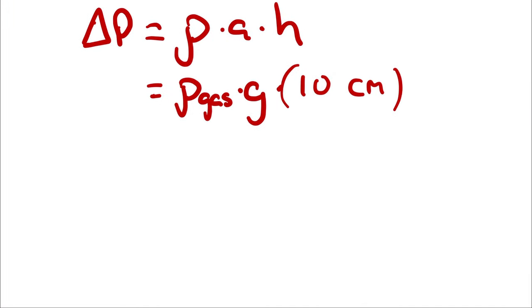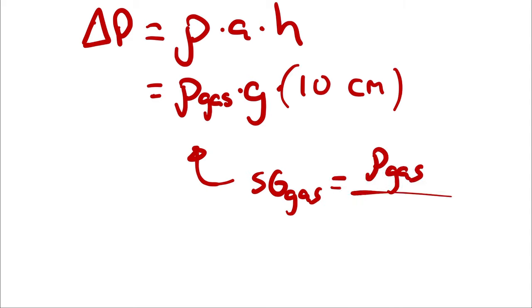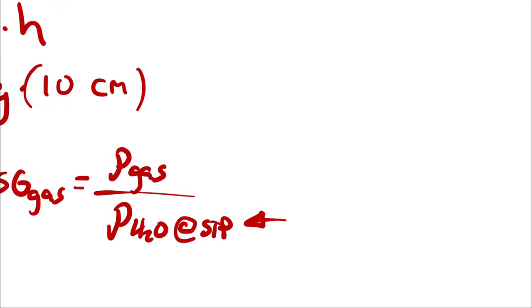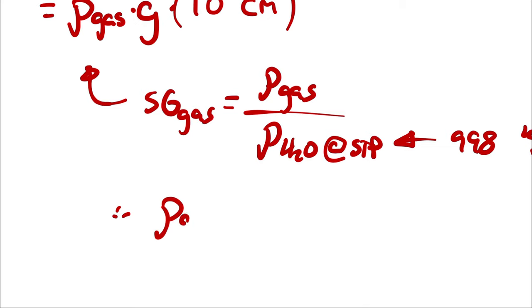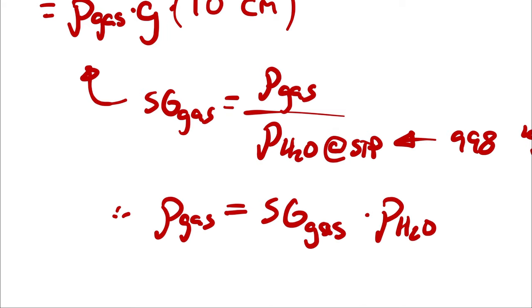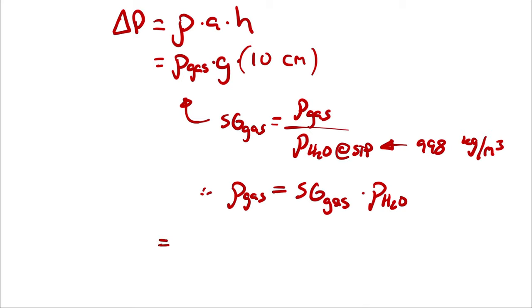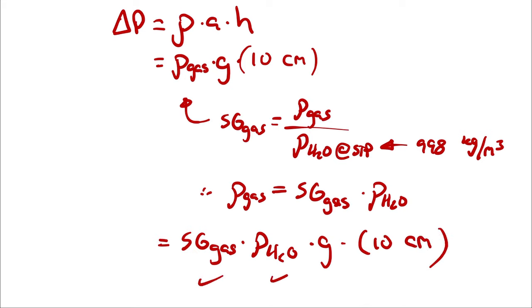We have enough information to determine the density of the gasoline, because we know its specific gravity. The specific gravity of the gas is the density of the gas divided by the density of water at standard temperature and pressure, which from table A1 or A3 is 998 kilograms per cubic meter. Therefore, the density of gasoline is specific gravity times the density of water. The delta P is then specific gravity times density of water times gravity times 10 centimeters, and I know all four of those quantities. I'll leave it symbolically for now.